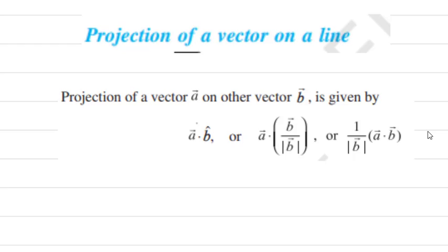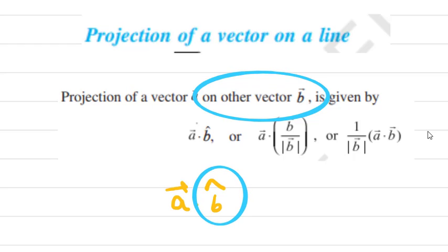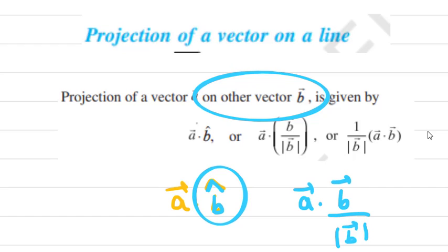Another important topic is the projection of a vector on a line. The projection of vector a on vector b is given by a dot b-cap, where b-cap is the unit vector of b, equal to vector b divided by magnitude of b. So the projection of a on b equals a dot b divided by magnitude of b.